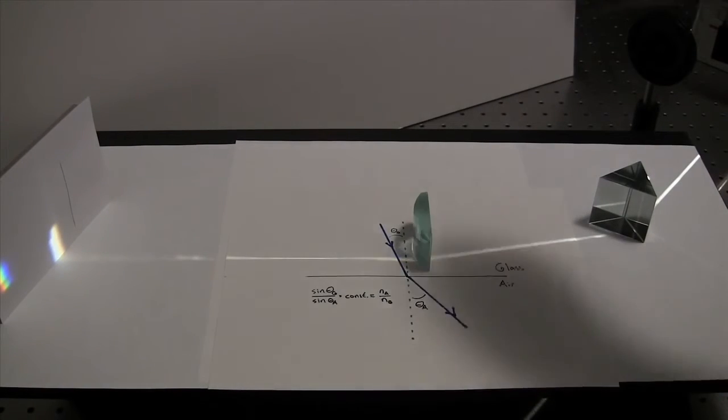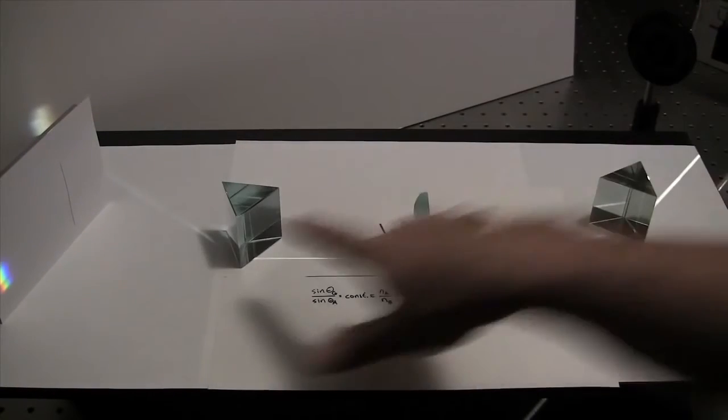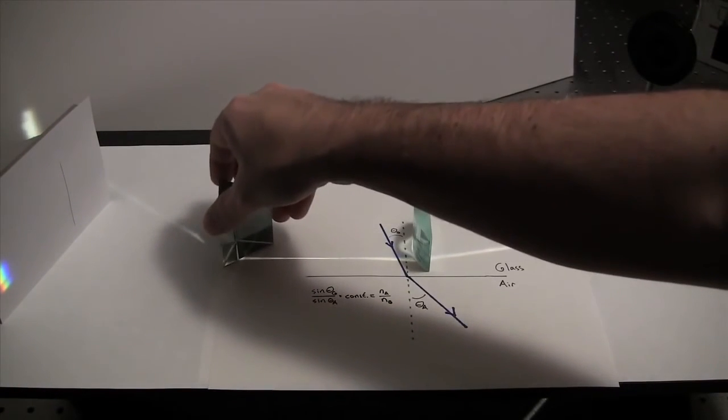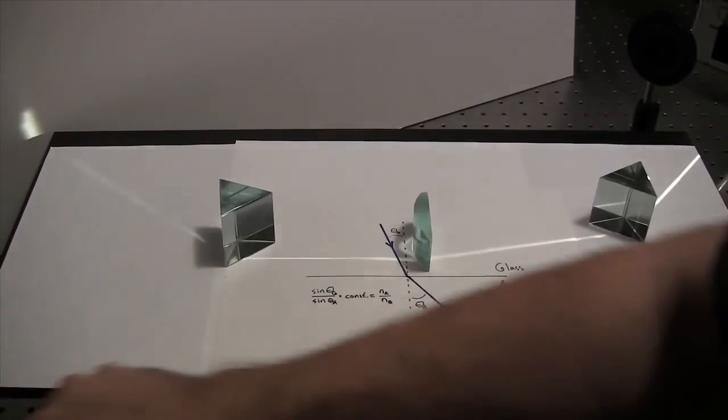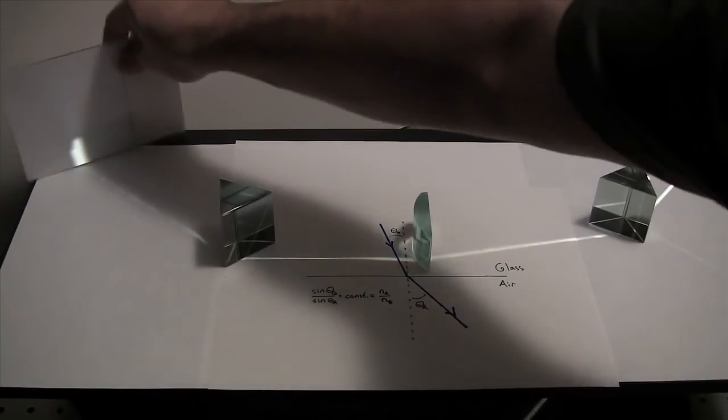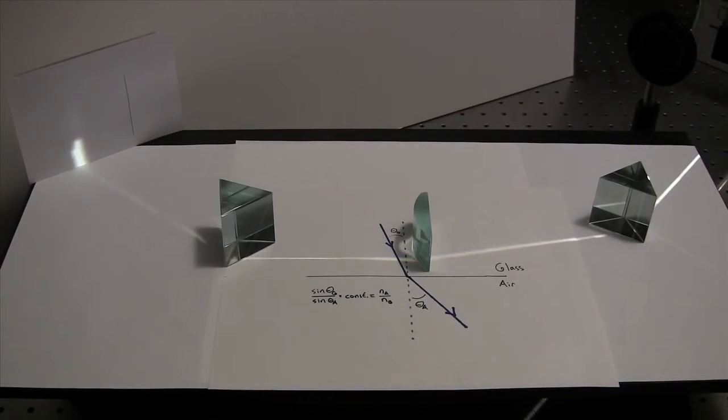At some distance away from the lens, we'll put another prism. And this distance, again, should be roughly twice the focal length. And we adjust the prism. And what we see is a reasonable approximation of white light.